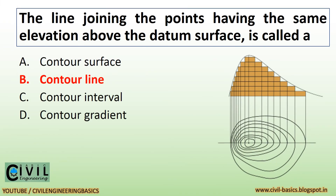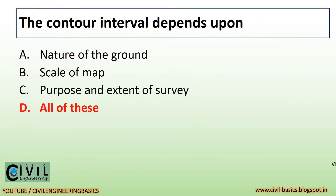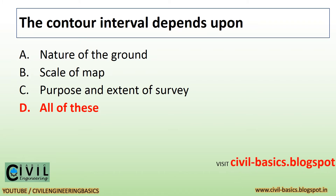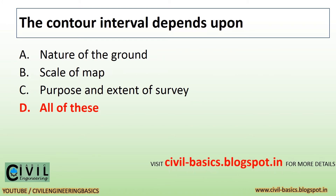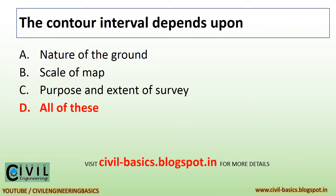The line joining the points having the same elevation above the datum surface is called the contour line. You can see contour lines in the given figure. The contour interval depends upon the nature of the ground, the scale of the map, and the purpose and extent of the survey.